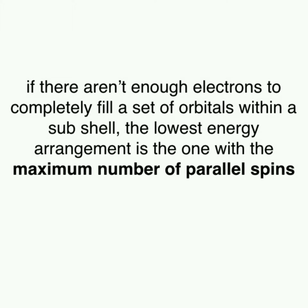This tells us two things. Since electrons within the same orbital have opposite spins, electrons will first occupy each orbital singly before pairing up, in order to have the most number of parallel spins. Secondly, we know that when the orbitals are singly occupied, all the electrons will have parallel spins, meaning they're in the same direction.